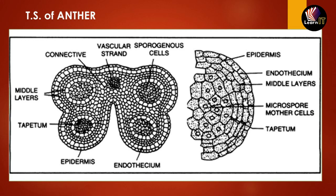The sporogenous cells help in the formation of spores, which ultimately develop into pollen grains. From the detailed wall diagram, going outward to inward: the outermost layer is the epidermis, then the endothecium, then the middle layer, and the innermost is the tapetum, which is made up of nutritive material. Inside there are sporogenous cells, also known as microspore mother cells, which help in pollen grain formation.